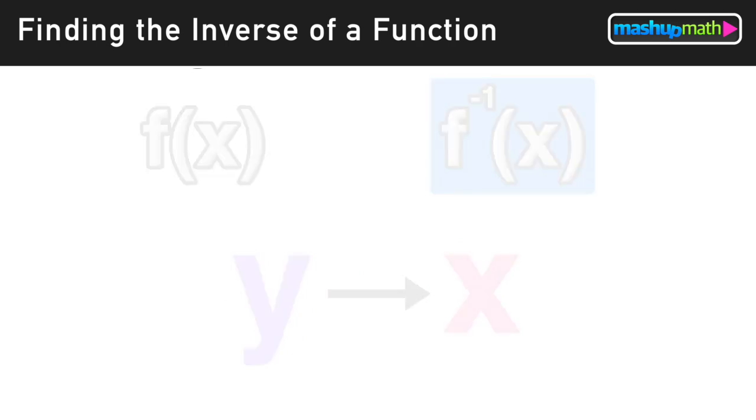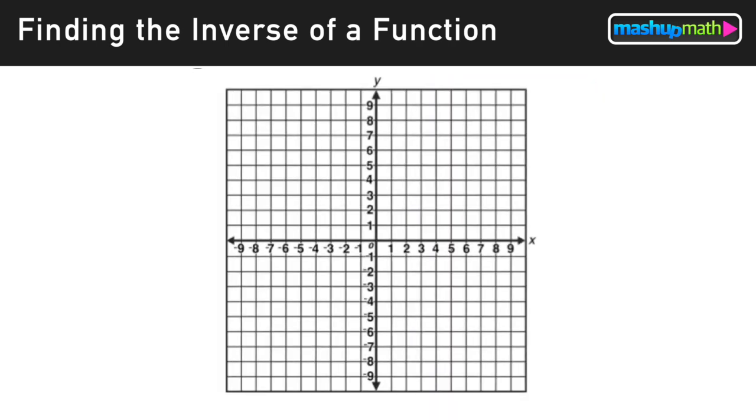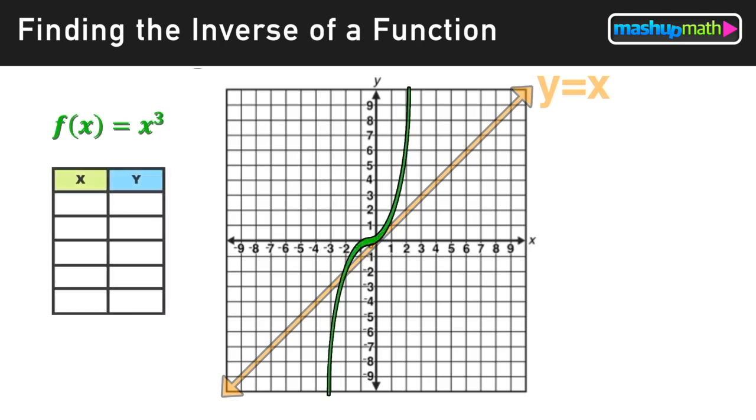So first we'll look at the line y equals x. That's that diagonal line where the x-coordinate and the y-coordinate are always the same number. Now on that same graph, let's look at the function f(x) equals x cubed, and along with that function, we have the corresponding table of values.